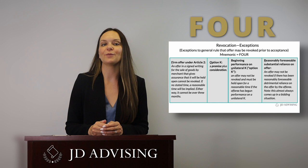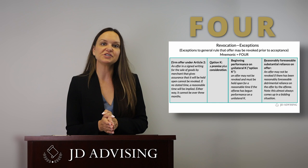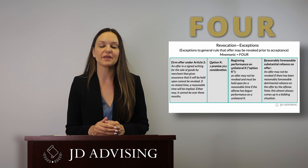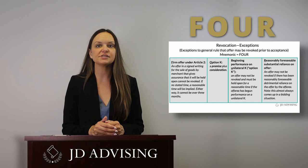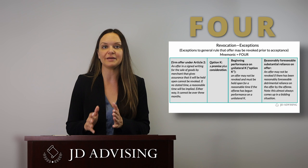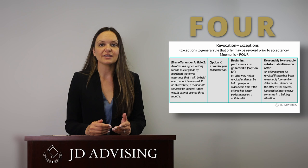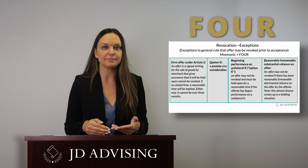This is the classic situation where we see reasonably foreseeable substantial reliance on an offer. When the general contractor solicited bids from subcontractors, this is a situation where everyone understands what's at stake. Subcontractor A should have understood that when they came in with the lowest bid, they were going to win the job, and that means their offer would be relied upon by the general contractor. That's exactly what happened here, so while the general rule is you can revoke at any time prior to acceptance, this exception — reasonably foreseeable detrimental reliance on an offer — kicks in, making this offer irrevocable.